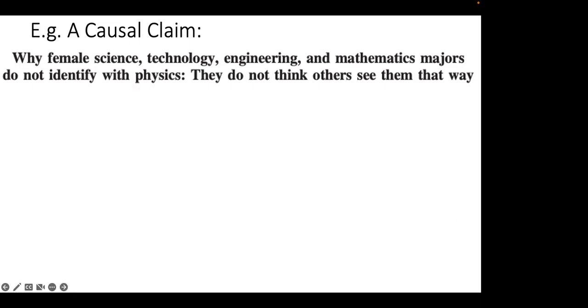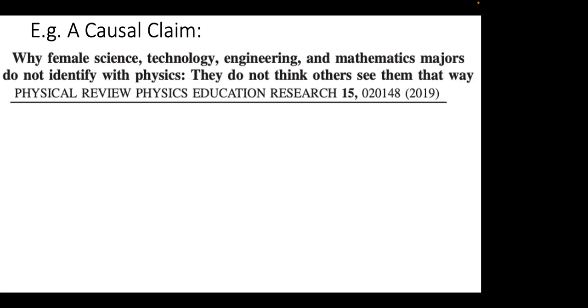Let's give an example of a causal claim in PRPER. This is the title of a paper that appeared there: 'Why female science, technology, engineering, and math majors do not identify with physics: they do not think others see them that way.' That's a pretty clear causal claim — if you can change how a student thinks others see them, that will cause a major effect on whether they then identify as physics-type people.